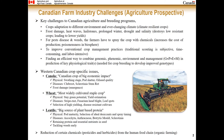Here I want to address some key challenges to Canadian agriculture and breeding programs. Firstly, crop adaptation to different environments and ever-changing climate — frost damage, heat waves, hailstorm, prolonged weather, drought, and salinity. For pest disease and weeds, farmers have to spray crops with different chemicals, which increases the cost of production and is harmful to the biosphere. Traditional scouting is subjective, time-consuming, and labor-intensive. We need to find an efficient way to combine genome, phenome, environment, and management in predicting key physiological traits.